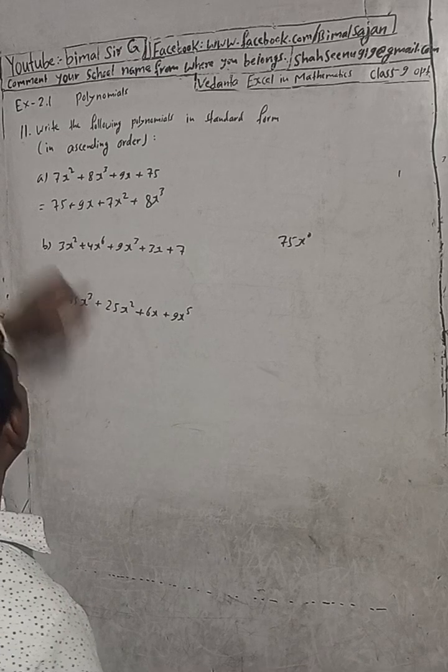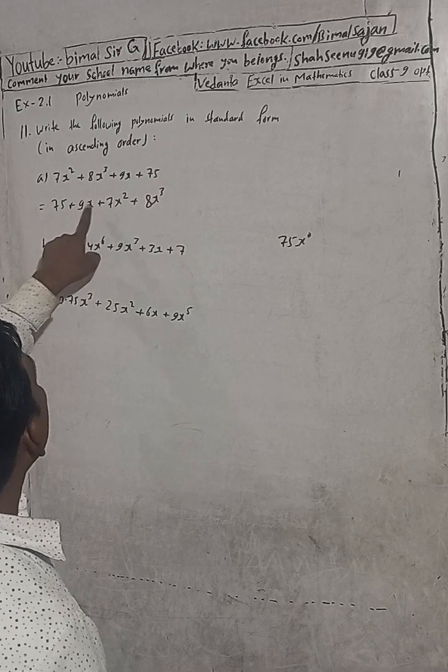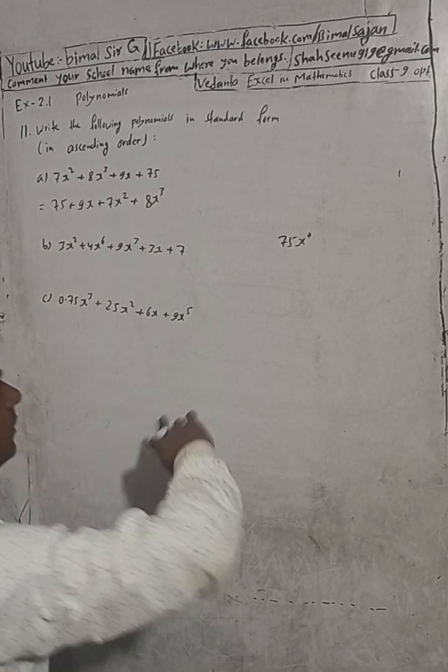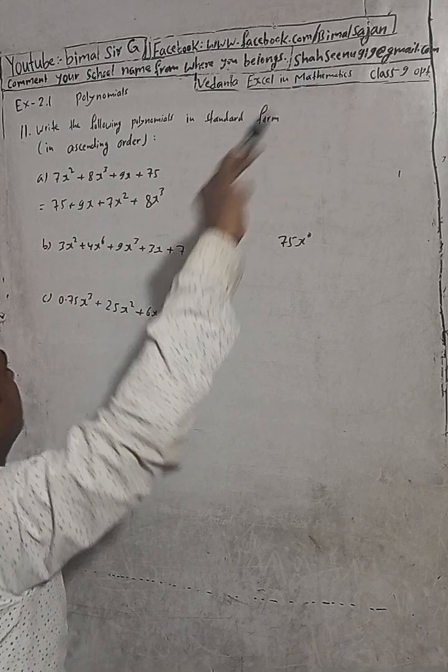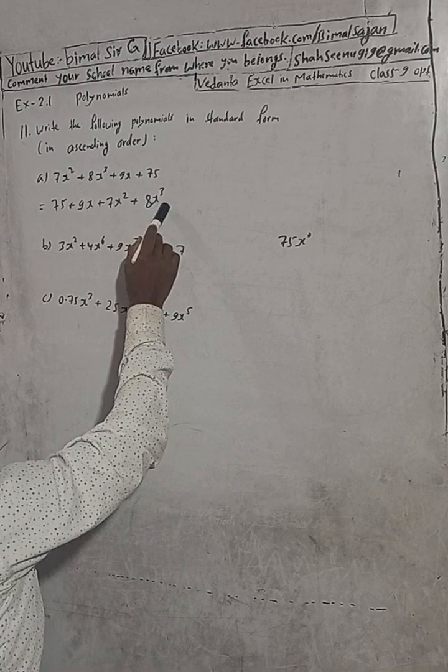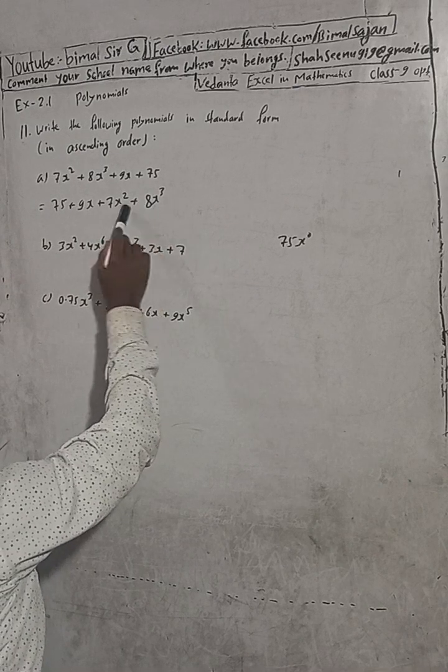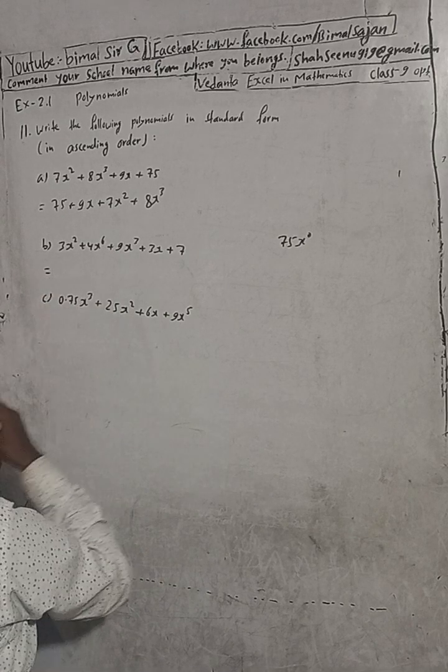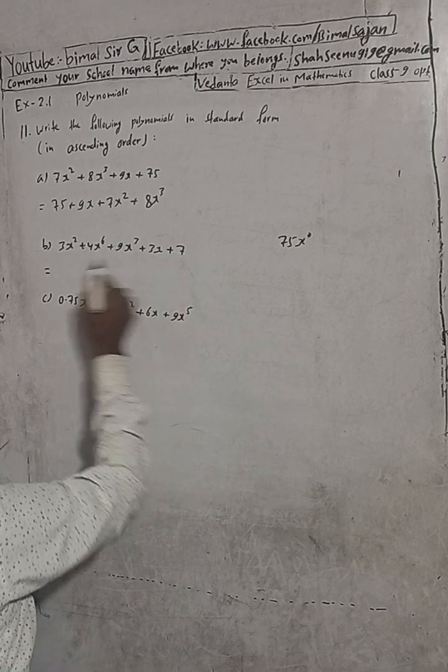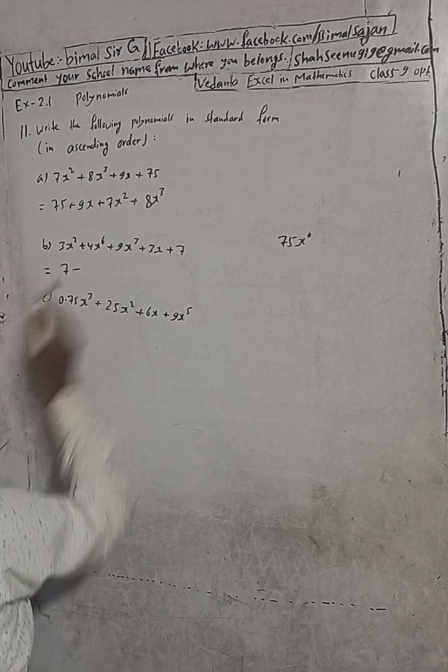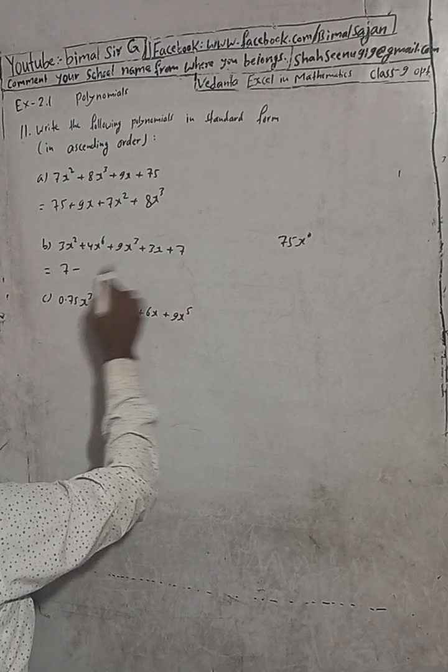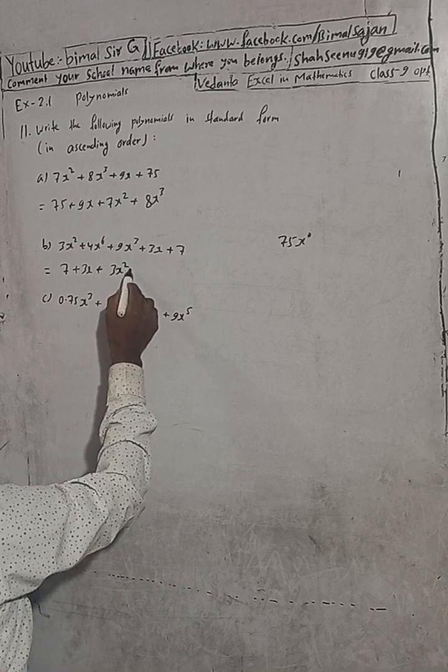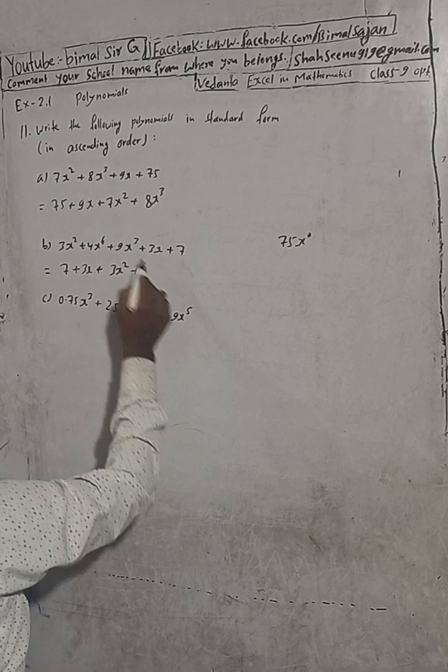For part b, the standard form in ascending order will be: constant term 0, then power 1 which is plus 3x, then power 2 which is plus 3x squared, and power 3 which is plus 9x cubed.